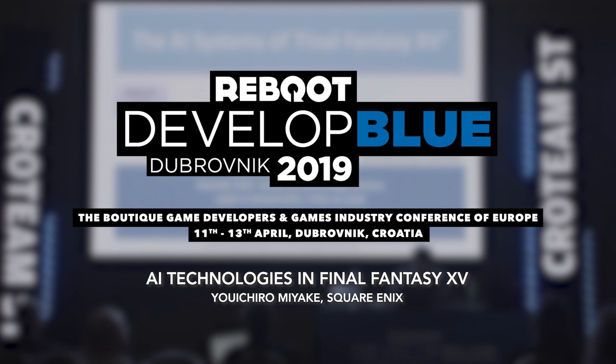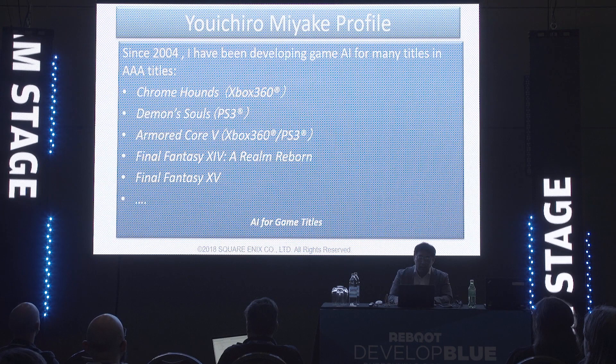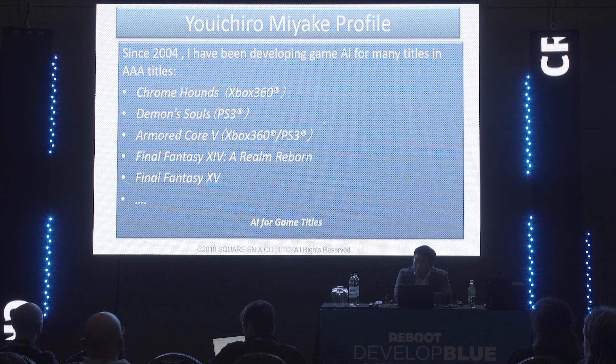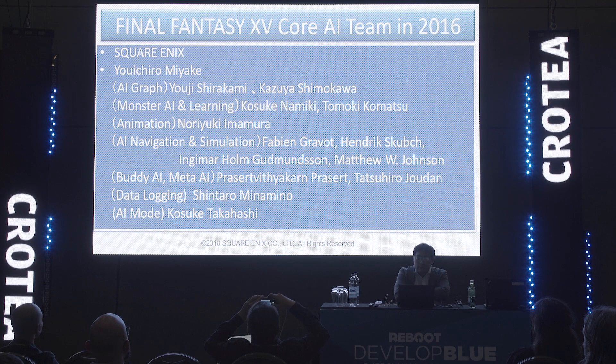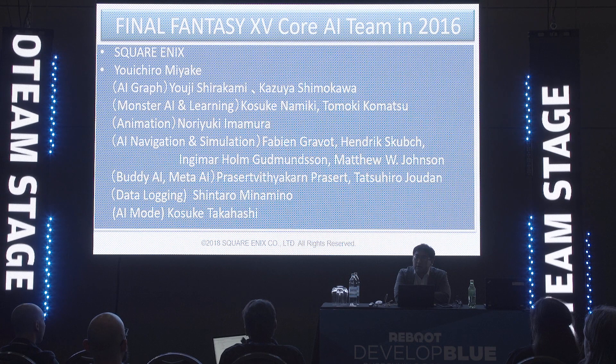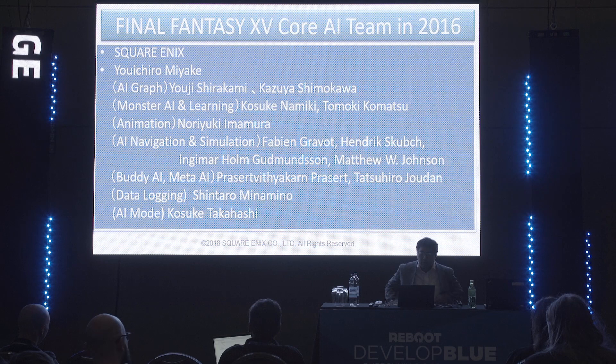Hello, my name is Yoshino Miyake, Square Enix's lead AI researcher and Final Fantasy XV lead. I have been developing game AI for many titles, especially AAA titles: Tromhound, Demon's Souls, Armor Core, and Final Fantasy XIV and XV. Recently, AAA title AI systems are very large, so the AI team's numbers are increasing. For Final Fantasy XV, about 13 people focused specifically on AI, from international teams across the Americas, Europe, and Asia.